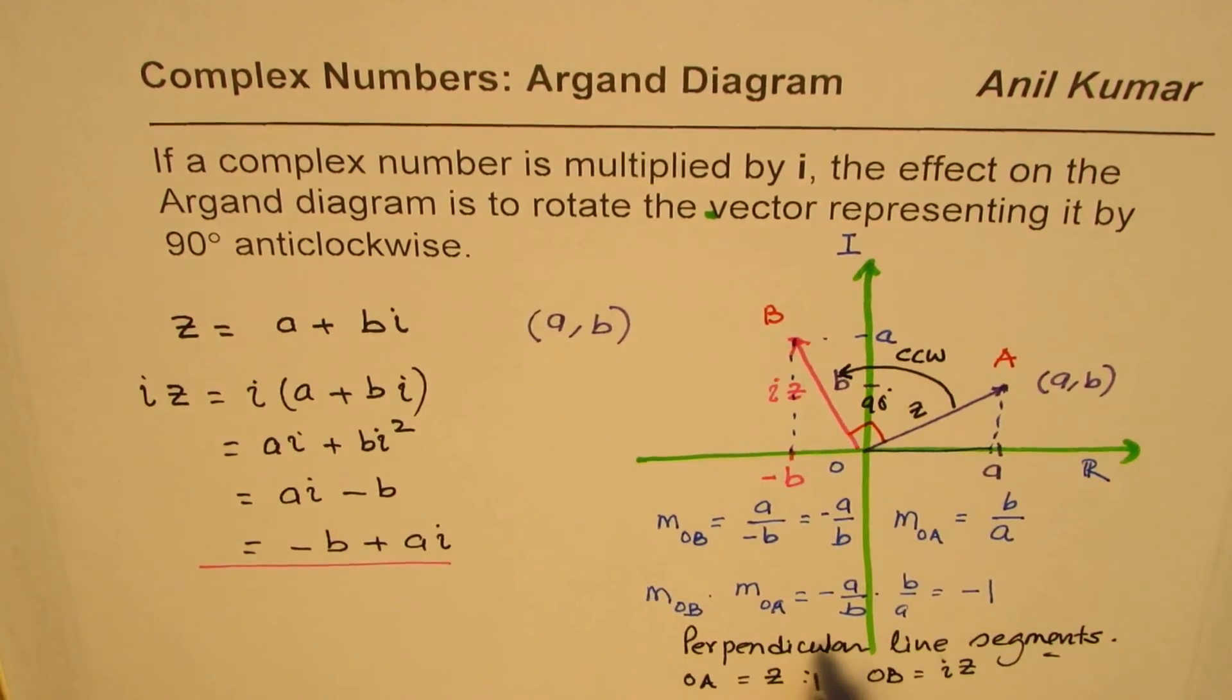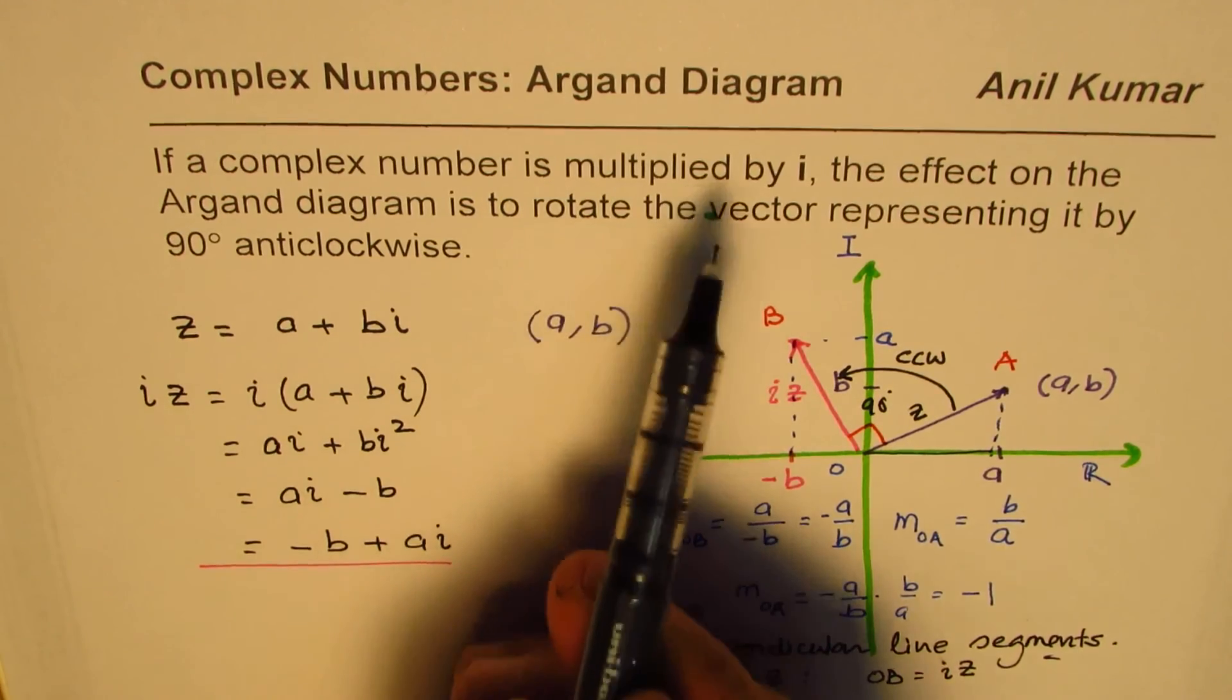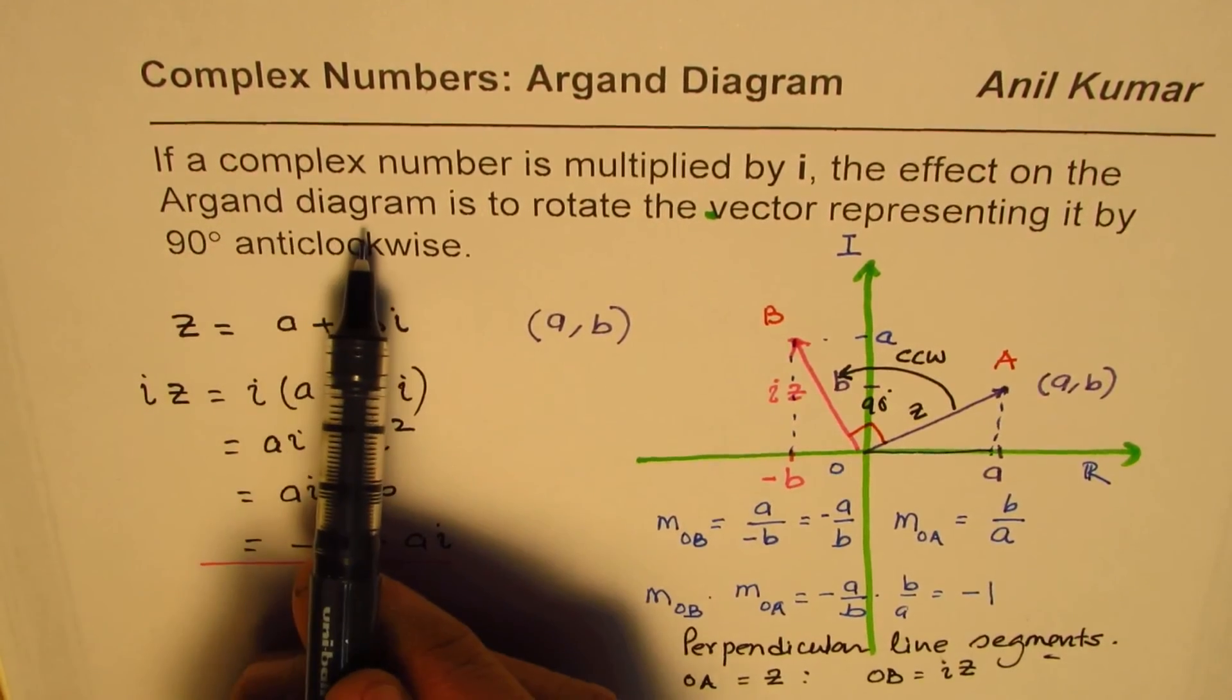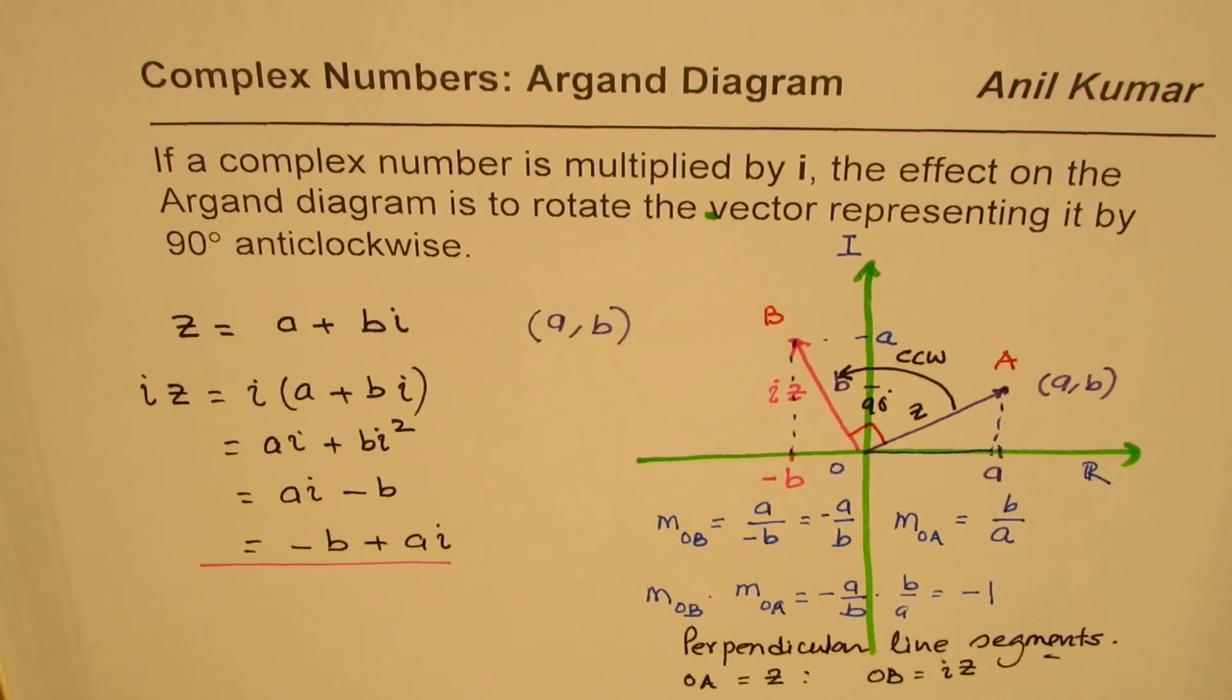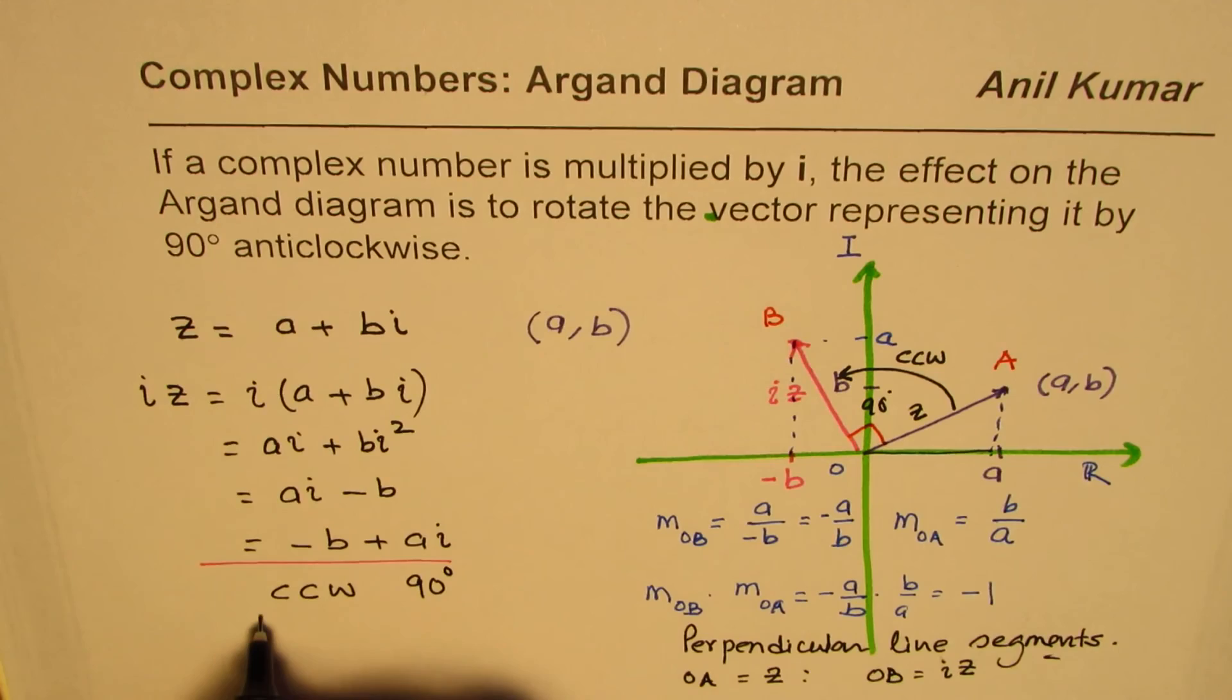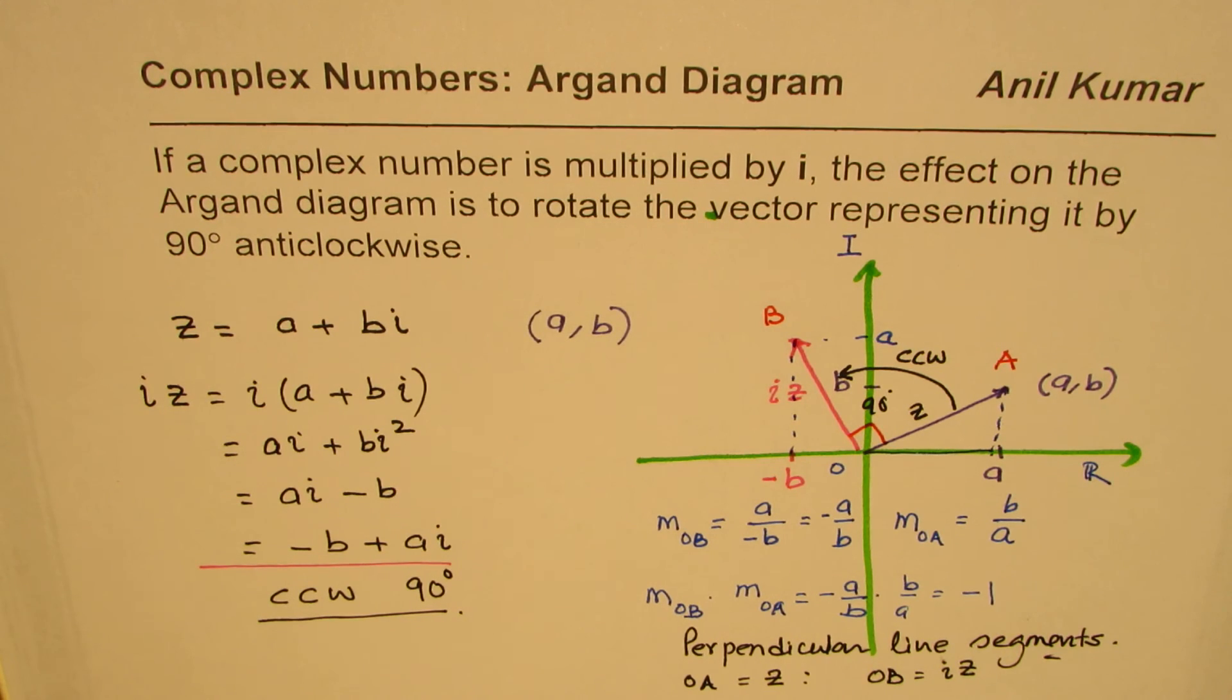So, what we conclude from here is that if a complex number is multiplied by i, the effect on the Argand diagram is to rotate the vector representing it by 90 degrees anticlockwise or counterclockwise by 90 degrees. So, that is what we learn from this video. I'm Adil Kumar. You can always share and subscribe my videos to learn a lot. Thank you and all the best.